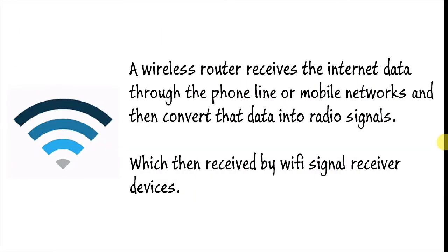So how it works: a wireless router receives the internet data through the phone line or mobile networks and then converts that data into radio signals, which are then received by Wi-Fi signal receiver devices like your computer, smart TV, mobile, and any such stuff.